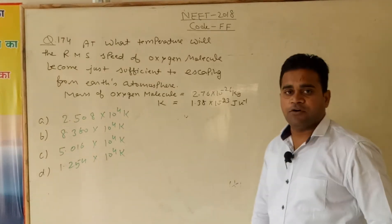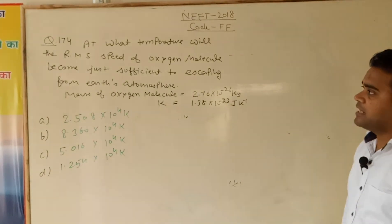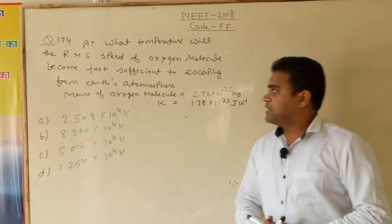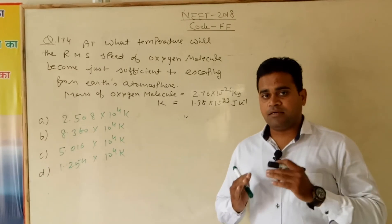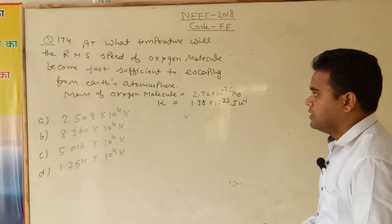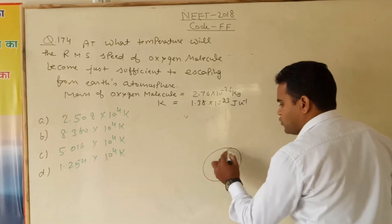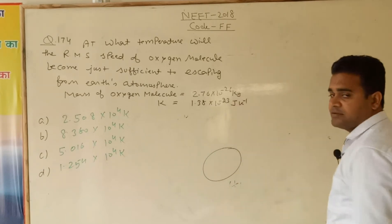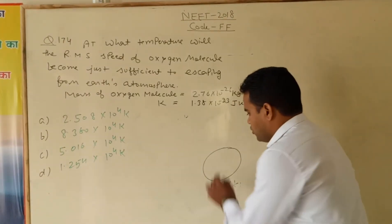And now move to question number 174. At what temperature will the RMS speed of oxygen molecule become just sufficient to escape Earth's atmosphere? At what temperature should the molecule be so that it can leave the surface of the Earth?